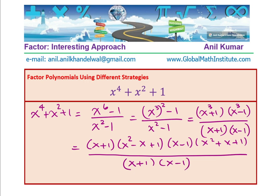And now, we can simplify this. x plus 1 cancels, x minus 1 cancels and we get the factors and our result which is x to the power of 4 plus x square plus 1 equals x square minus x plus 1 times x square plus x plus 1.